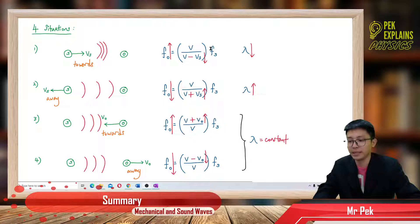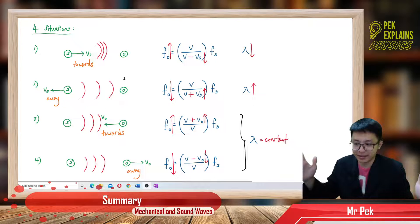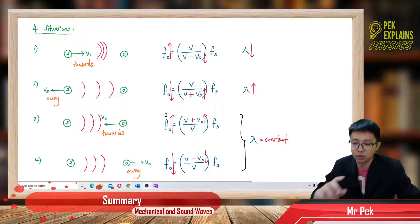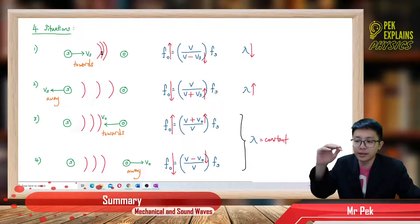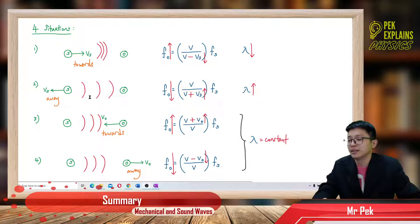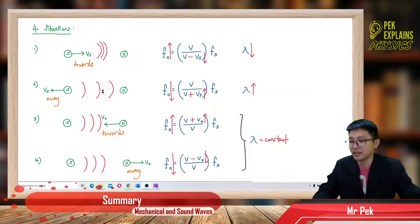In the second situation, if the source is moving away from the observer, the wave left by the source towards the observer is more expanded, so the wavelength becomes longer. When the wavelength becomes longer, frequency becomes lower. So the frequency heard by the observer is lower when the source moves away.